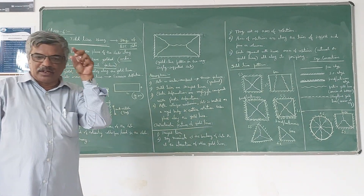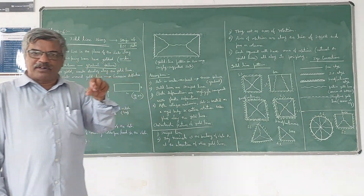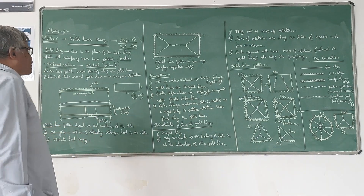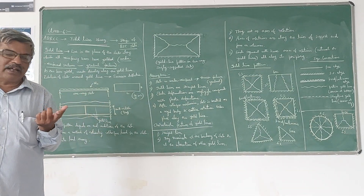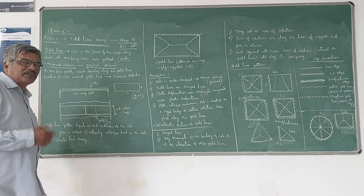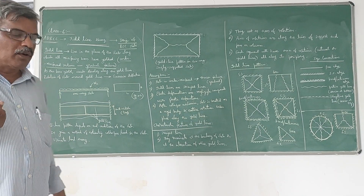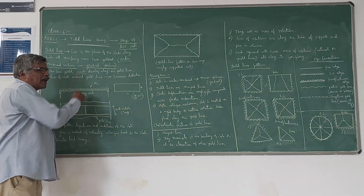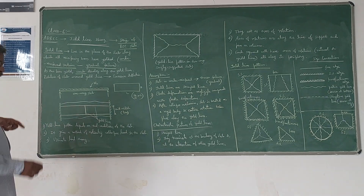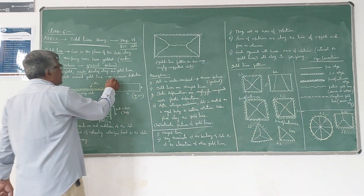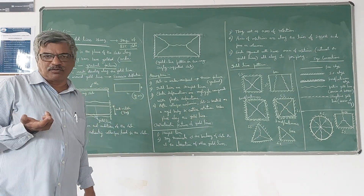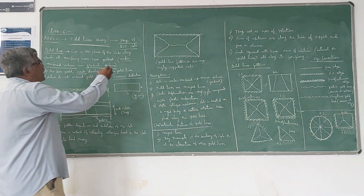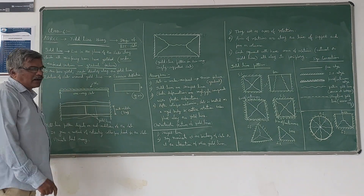Failure is gradual in under-reinforced sections because steel yields first and then concrete fails. Whereas in the case of over-reinforced sections, compression failure is sudden. As bars yield, cracks will develop around the yield lines and rotation of the slab will occur around those yield lines, causing excessive deflections. This plain failure is gradual, which is why yield line theory is mainly used for under-reinforced sections.